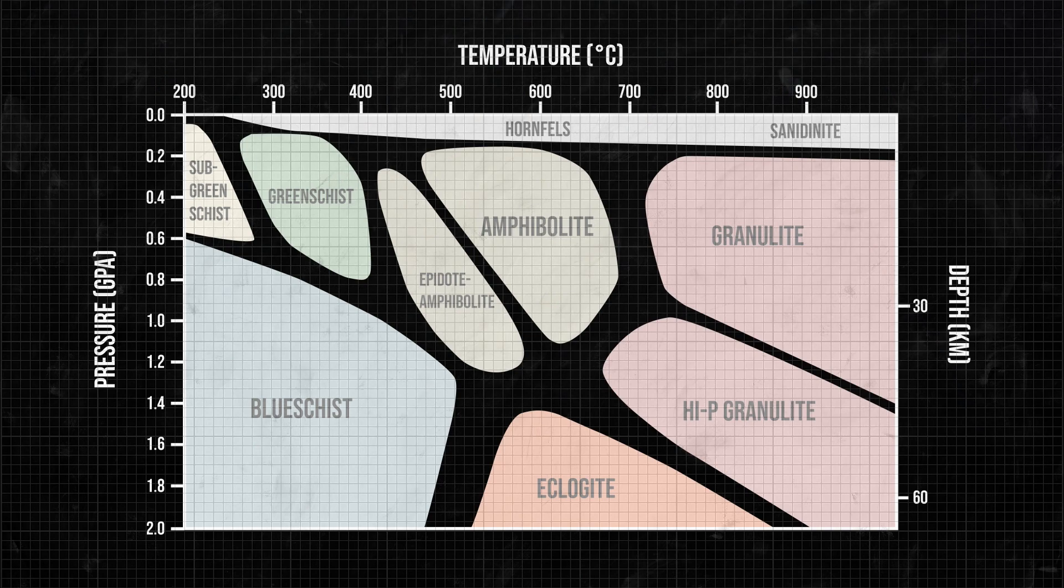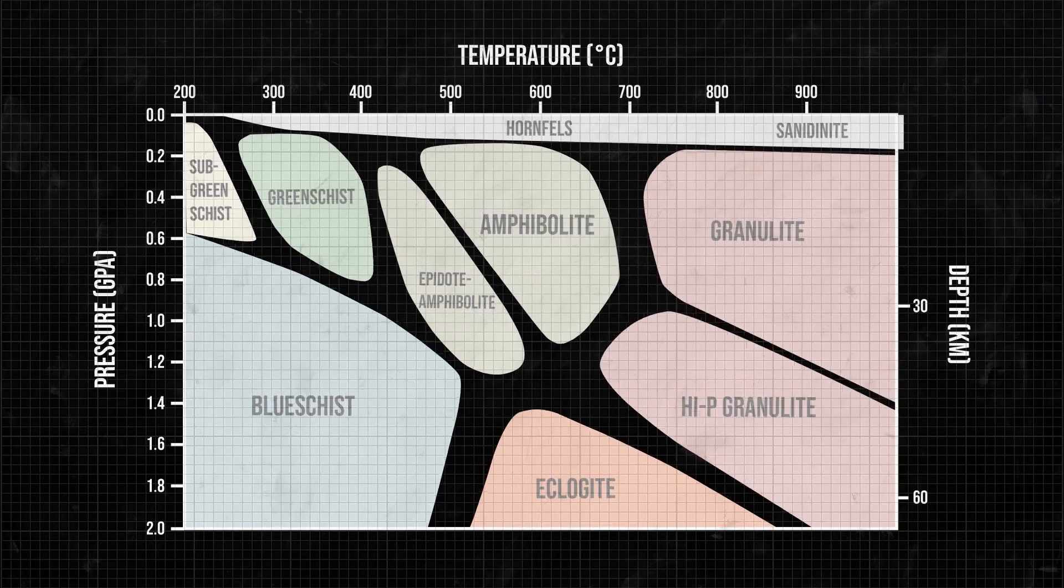Metamorphism encompasses a wide range of mineral transformations, all happening in the solid state in the earth's crust over thousands to millions of years.